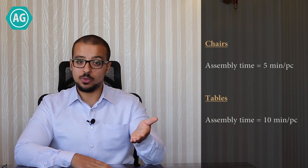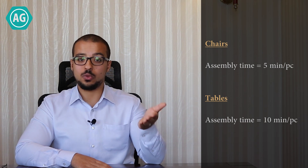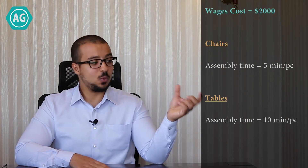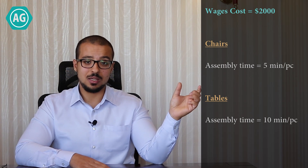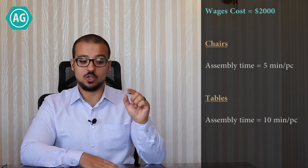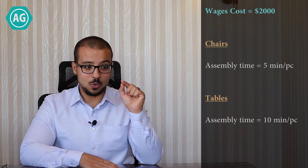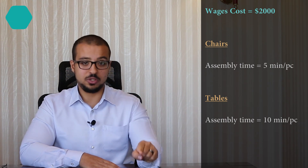The products use different quantities of components and different assembly times. For example, a worker can assemble a chair in 5 minutes but can assemble a table in 10 minutes, so tables take twice the time as chairs. Now let's take one of the conversion costs as an example — the wages we have to pay to the worker. Every month we have to pay this worker 2,000 USD as a wage.